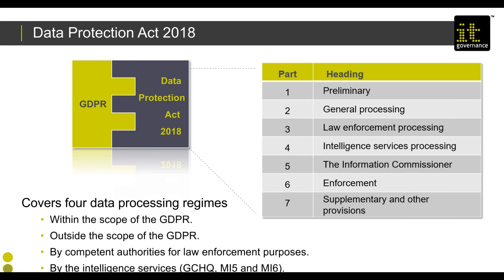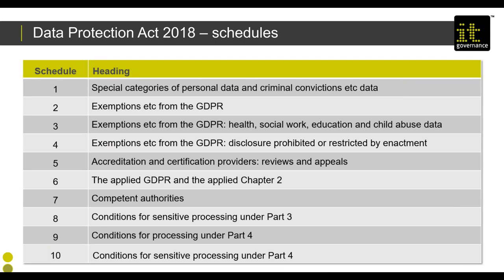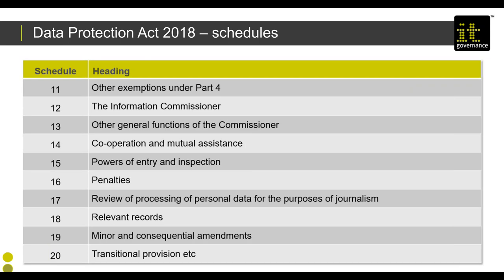Part 3 is often referred to as simply 'Part 3 processing.' The Act's seven parts are supported by 20 different schedules. For law enforcement purposes, Schedule 7 helps identify who is a competent authority, and Schedule 8 lays down the conditions for sensitive processing under Part 3. Schedule 16 talks about penalties, and the Act also covers transitional arrangements and powers of the Information Commissioner to take action against those who don't follow its requirements.